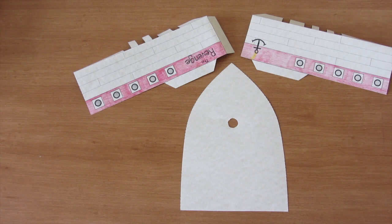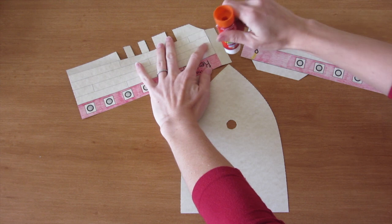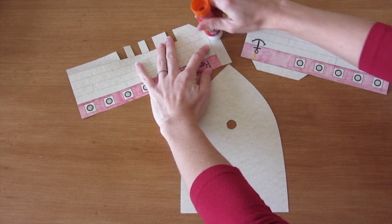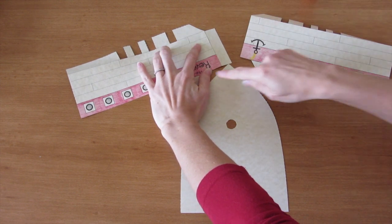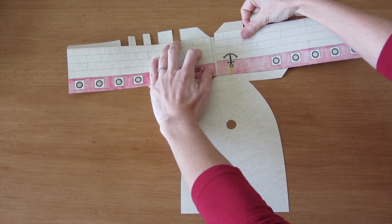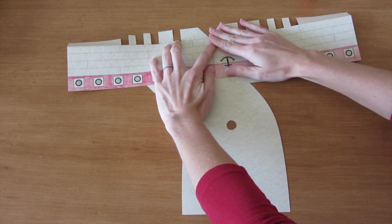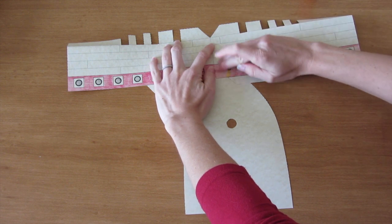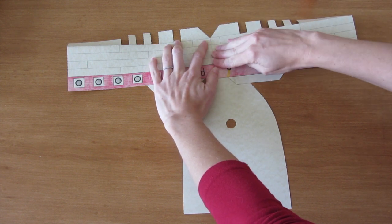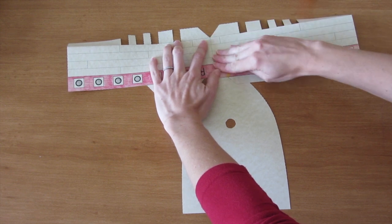Alright, get your glue stick out because it is time to assemble the ship. Start by putting glue on this front tab and hooking your port side and your starboard side together. Make sure you line up the dotted lines. Press it down good. You want that to stay together.